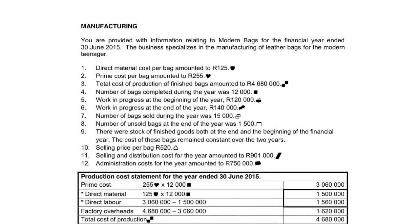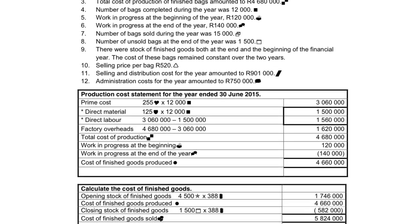Good morning. We will pay attention to manufacturing today. If we look at the production cost statement, we see that the primary cost consists of direct material plus direct labor. The reason it is called primary cost is because you can't produce anything if you don't have material, and if you have material but no laborers to change it into a useful article, you also cannot produce anything. So direct material plus direct labor is your primary cost.